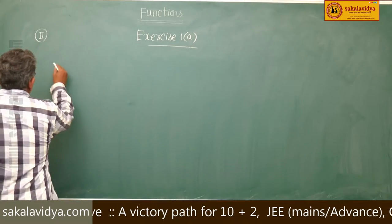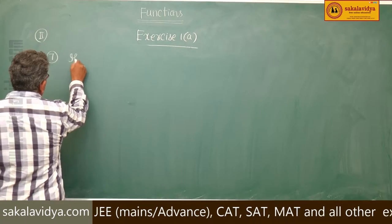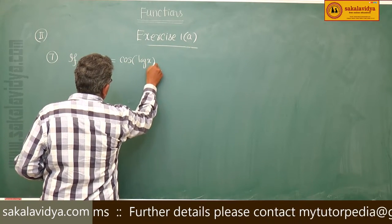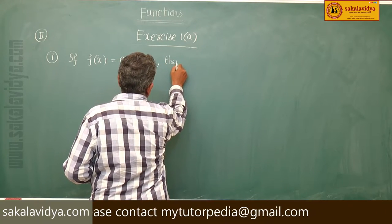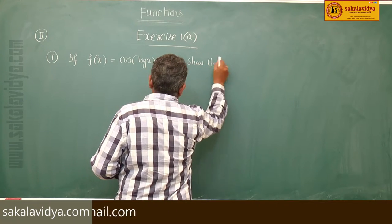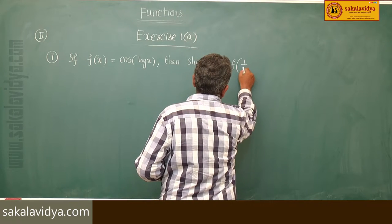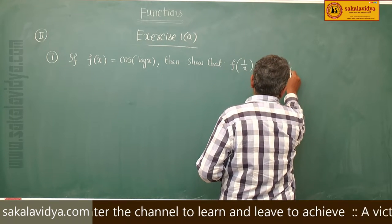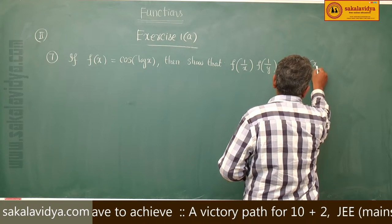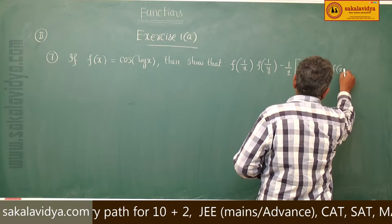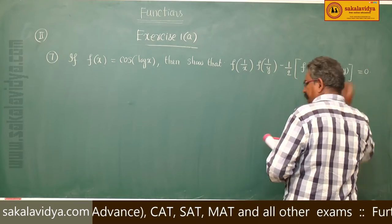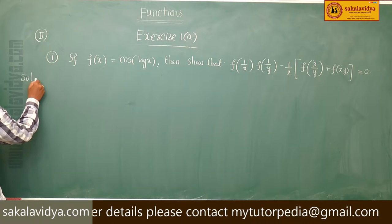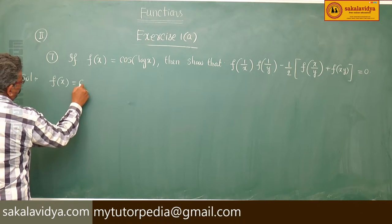Seventh question. If f of x is equal to cos of log x, then show that f of 1 by x multiplied by f of 1 by y minus half times f of x by y plus f of x y equals 0. Given f of x equals cos of log x.